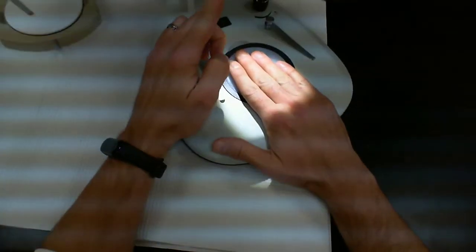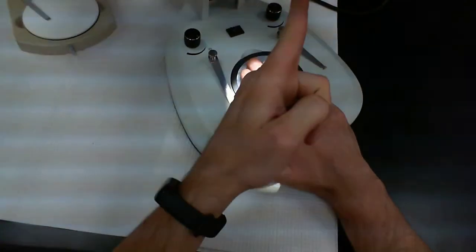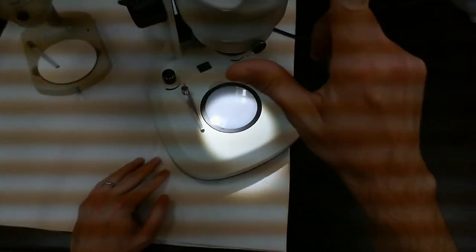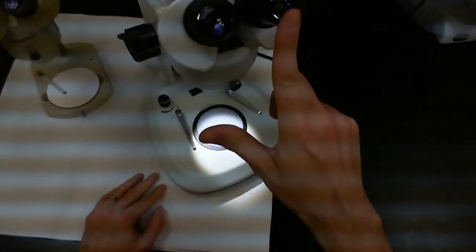What's going to happen is that light will be reflected off my hand and go up into this objective lens and be magnified. I will see a much larger version of it up here through the ocular lenses.